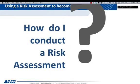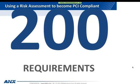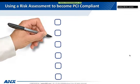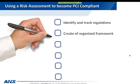So let's determine how you conduct a risk assessment. PCI DSS is made of over 200 requirements, which can generate thousands of mandatory compliance tasks to achieve and maintain. Imagine if you had to attack this process manually — the effort and the cost. First, you want to identify and track regulations and internal standards that apply to your organization. Second, create an organized framework from these regulations and standards and apply it to organizational entities, business processes, and assets.